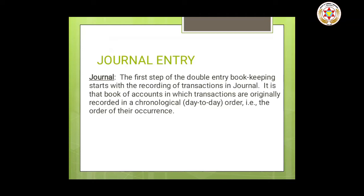Journal means it records all daily transactions of a business in the order in which they occur. A journal may therefore be defined as a book containing a chronological record of transactions. It is the book in which transactions are first recorded under the double entry system. Thus journal is the book of original record, and a journal does not replace but precedes the ledger.